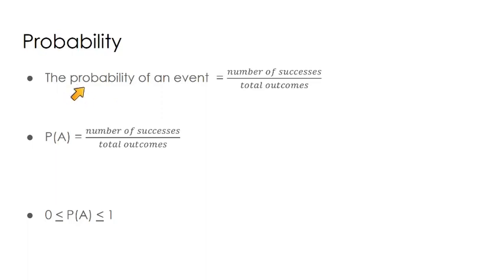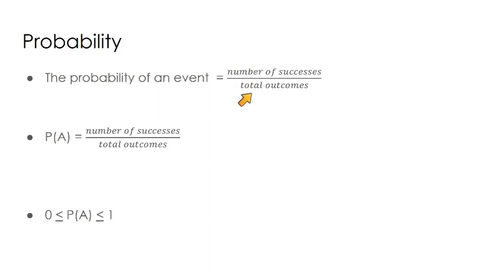Probability is defined as number of successes out of total outcomes. For example, the probability of flipping heads is one out of two, because there's one way to flip heads out of two possible outcomes. The notation for the probability of event A is P(A) — almost like function notation. Be familiar with that notation.